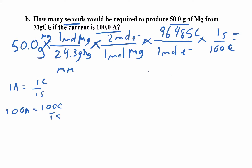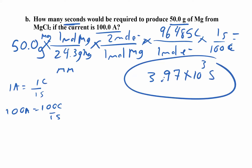Working all that out gives 3.97 × 10³ seconds. To summarize the reverse problem: molar mass converts grams to moles, stoichiometry converts moles of Mg to moles of electrons, Faraday's constant converts moles of electrons to coulombs, and then dividing by amps (coulombs per second) gives you seconds.